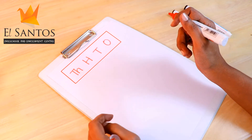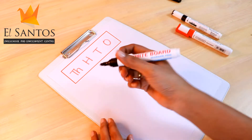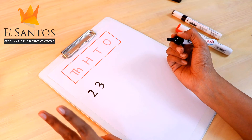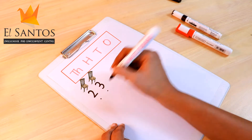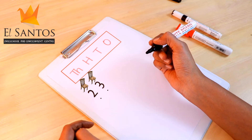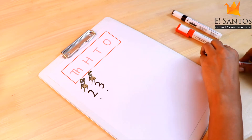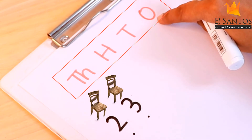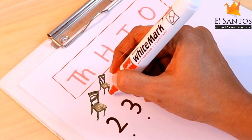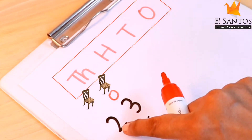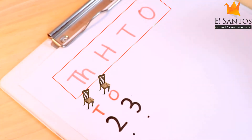Now let's consider a two-digit number. Let me write down a number. We call it a two-digit number because it has two places — one, two. Let's write the names of the places on top of this number in red. The first place is called the ones place, so we will write O on top of three. The next place is the tens place, so we will write T on top of the number two.